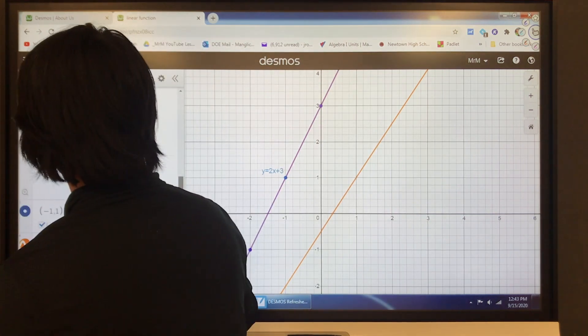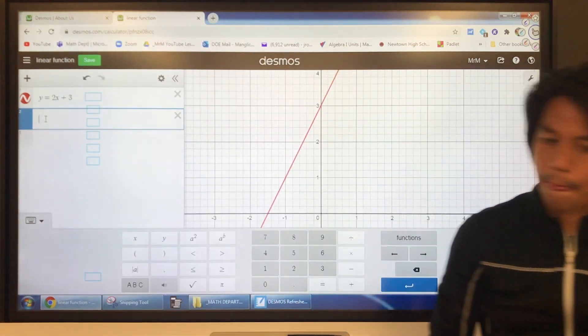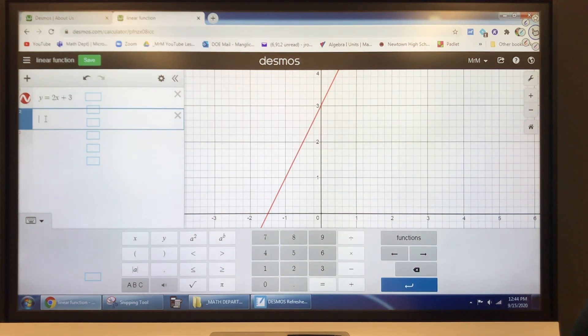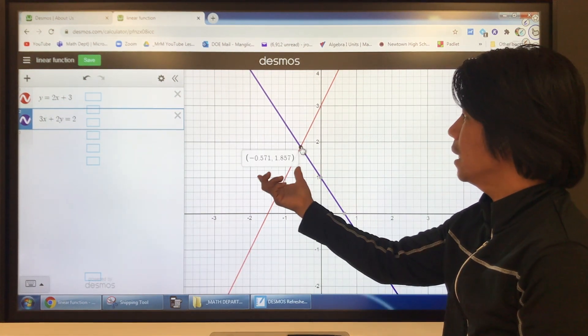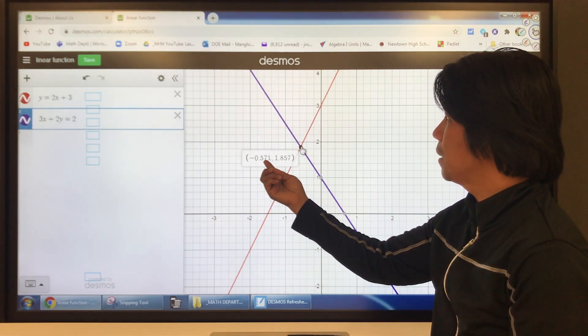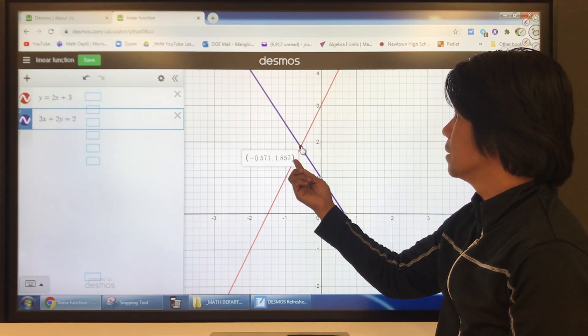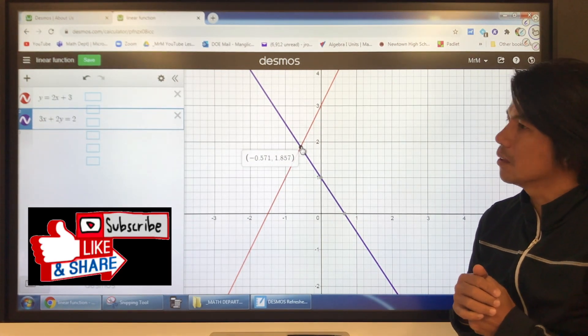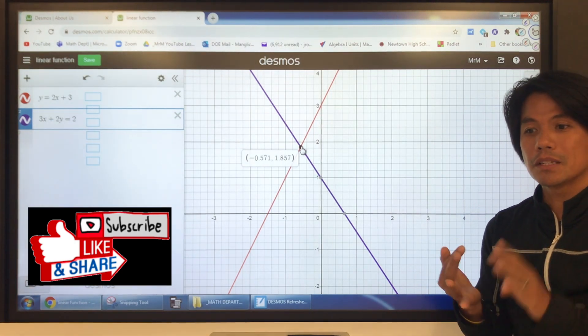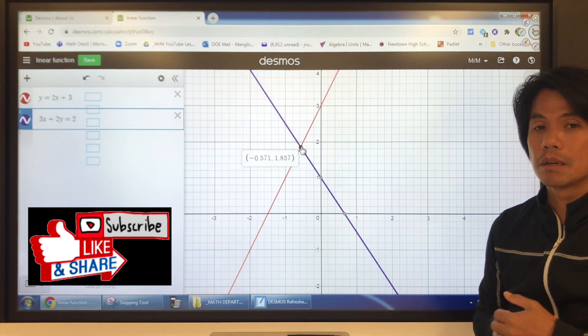Now, let's say we have another function here. Let's say 3x plus 2y equals 2. Right there. So this is a system of linear equations in two variables. It gives you the intersection. It gives you an actual value of the intersection: negative 0.571 comma 1.857. It's cool, isn't it? So when you're solving an equation, a system of linear equations, so if you're using the method of elimination and substitution, you can use Desmos to check your work graphically.